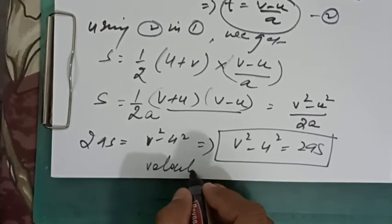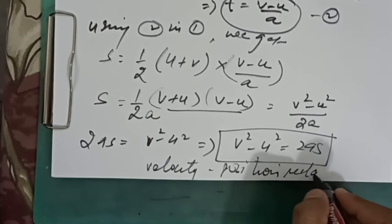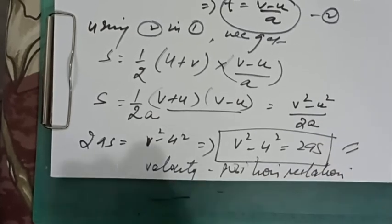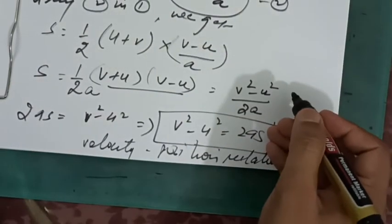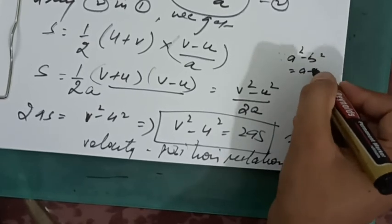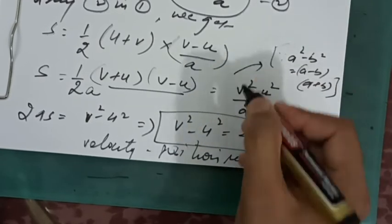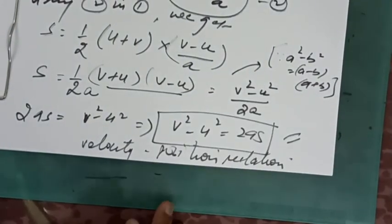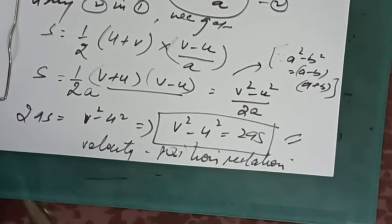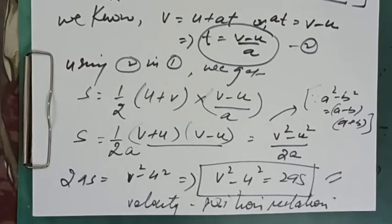This is the velocity-position relation, also known as the third equation of motion. To summarize: in the second equation of motion we eliminated v, and in the third equation of motion we eliminated T — in both cases using the first equation of motion. So this is all about the derivation of the three equations of motion.